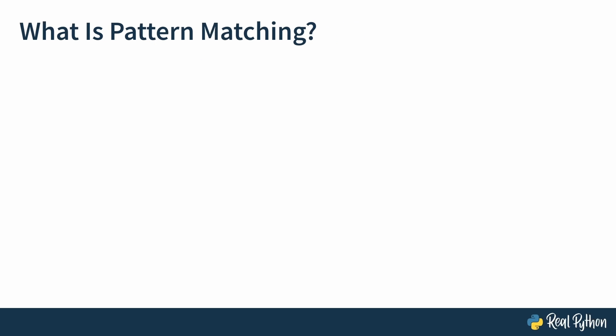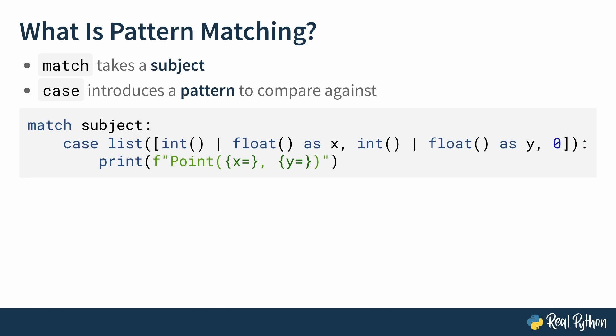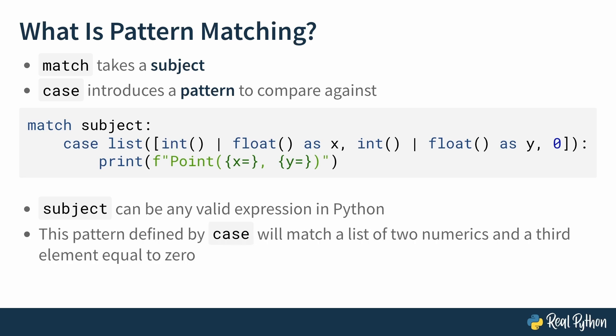You'll soon see that structural pattern matching in Python continues to build on this concept of deconstruction, allowing you to match complex and very specific data structures. So those are structural patterns. What about pattern matching? Match takes a subject. Case introduces a pattern to compare against. See this example. It may seem complicated right now, but by the end of this course, you'll be able to write patterns like this with ease. Match subject, colon, case, list, and in square brackets, int bar float as x, int bar float as y, zero, colon. Print an fstring containing point with the values of x and y interpolated inside a pair of parentheses.